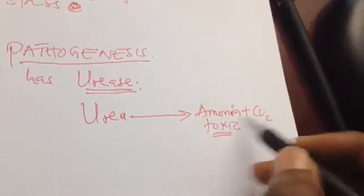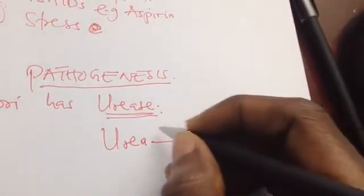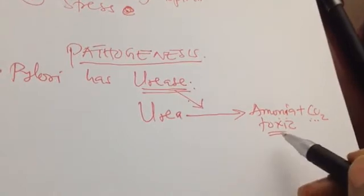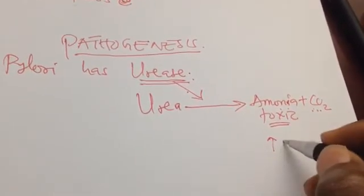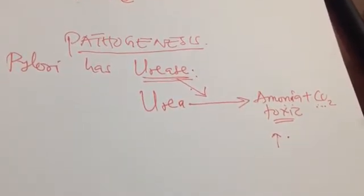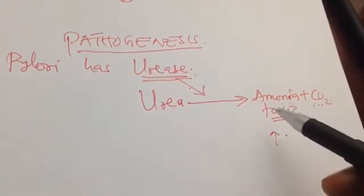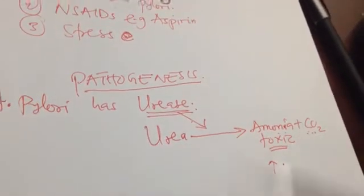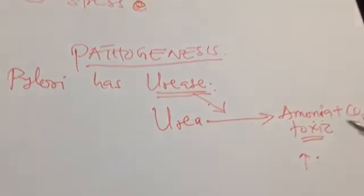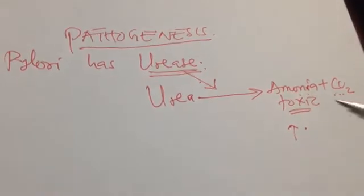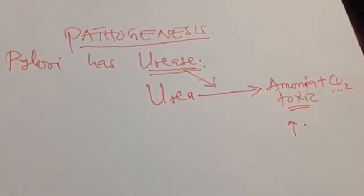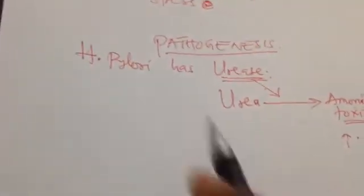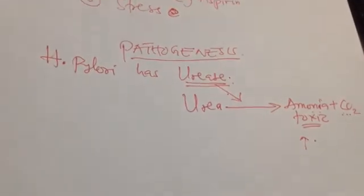Both ammonia and carbon dioxide are gases. The bacteria produces ammonia to increase pH — to neutralize the acidity of the stomach — allowing the bacteria to live. However, this ammonia is also toxic to the stomach and causes ulceration. Additionally, the immune system reacts against H. pylori, and in trying to kill the bacteria, it also damages the stomach lining, exacerbating the ulcer.